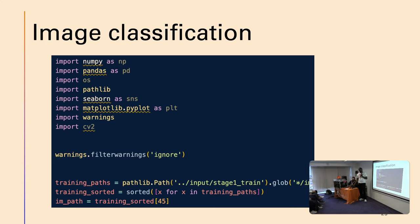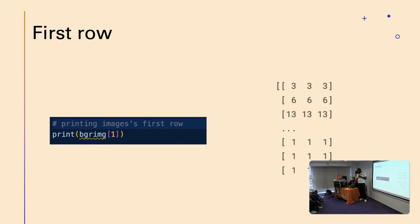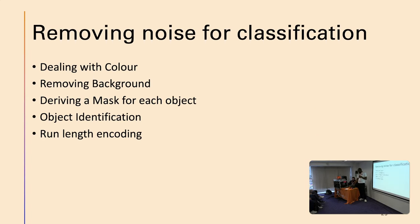We used those libraries, most of them Python libraries. Basically, what we did is to take the images, and through OpenCV, it's able to convert the image into an array of numbers. Those numbers are just pixels. For image analysis, we wanted to do those items: dealing with the color, removing the background, then deriving a mask, being able to identify what the object is, and run RLE, or run length encoding.